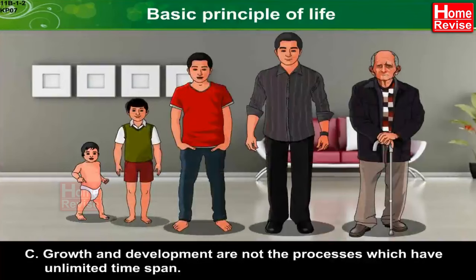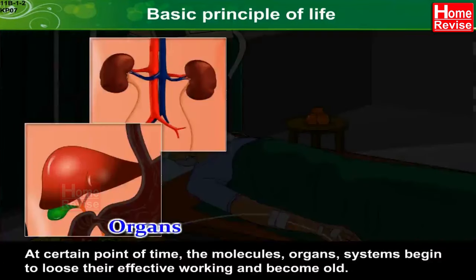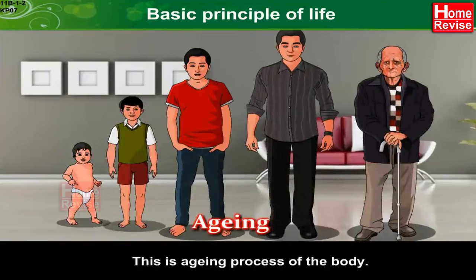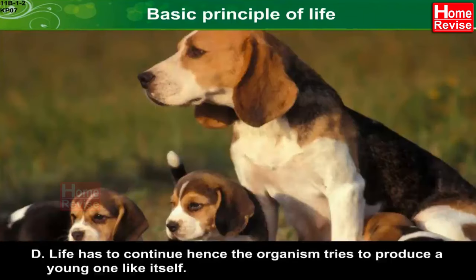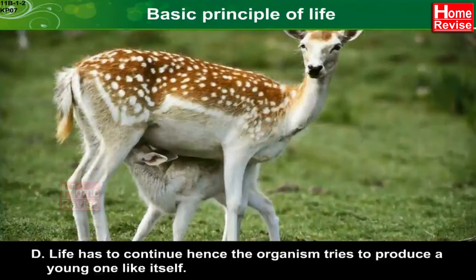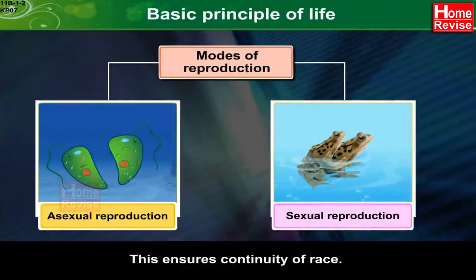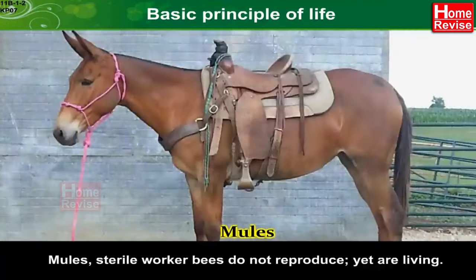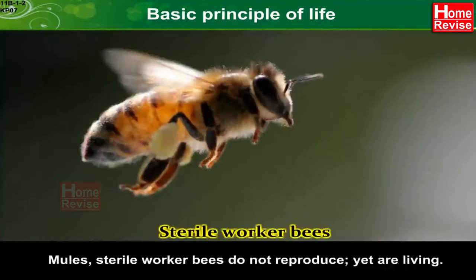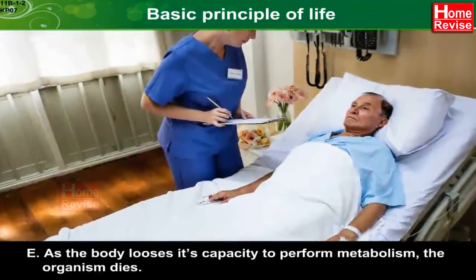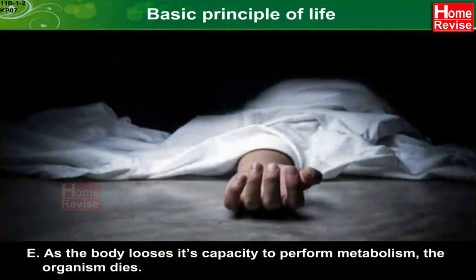C: Growth and development are not processes with unlimited time span. At a certain point of time, the molecules, organs, and systems begin to lose their effective working and become old. D: Life has to continue, hence the organism tries to produce a young one like itself, possible due to reproduction — asexual or sexual. This ensures continuity of race. Mules and sterile worker bees do not reproduce yet are living — can we call reproduction an inclusive characteristic of life? E: As the body loses its capacity to perform metabolism, the organism dies.